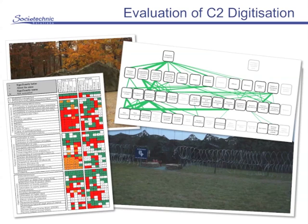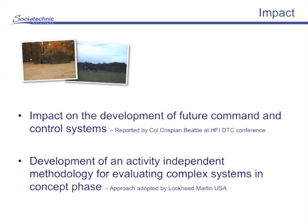We then evaluated the system against its predecessor and found we were able to make clear links between parts of the system that were performing well and the high-level descriptions at the domain level, and also described where the system wasn't performing quite so well. The benefit was a significant impact on the development of future command and control systems, and we developed an approach that can be applied quite quickly — it's been adopted by a number of different companies who have applied it around the globe in different settings.